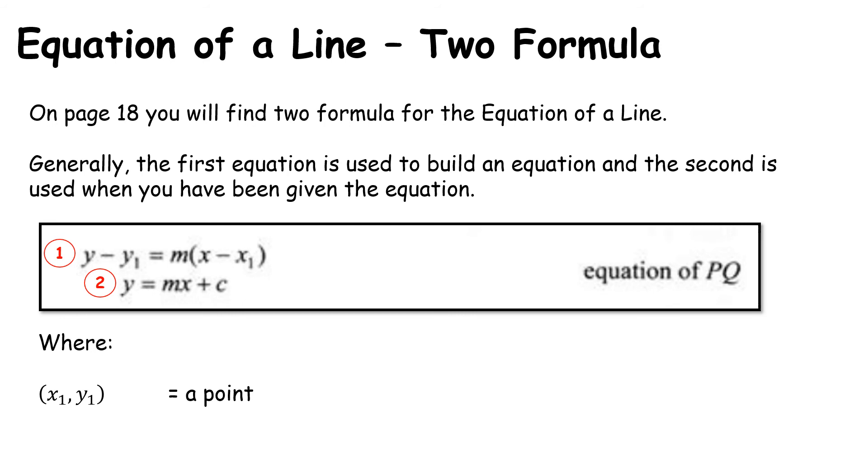So just to be aware, in the first formula it is Y minus Y1 is equal to M bracket X minus X1. So X1 Y1 is a point, M is the slope. And then in equation 2 it's Y equals MX plus C. So the M again is the slope. And that C is called the Y intercept. And that links back to the picture at the very top of page 18 that I pointed out. You can see that that line crosses the Y axis at the point 0C. That means that whatever that C value is, it tells us the point 0C, which is known as the Y intercept or where the line crosses the Y axis.